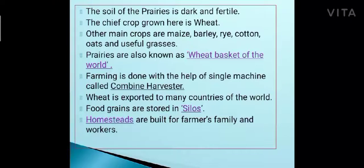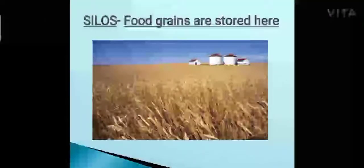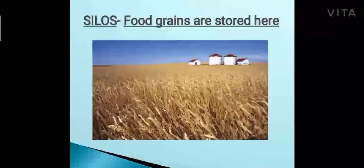Wheat is exported to many countries of the world, and for their own use they store food grains in big storage bins known as silos. Silos are the big storage bins in which food grains are stored. Homesteads are the houses built for the farmers, their family, and workers in the farmlands.